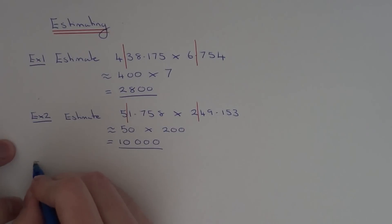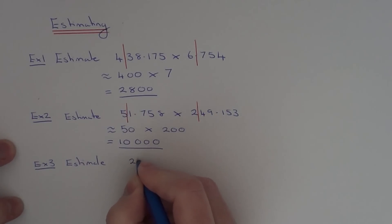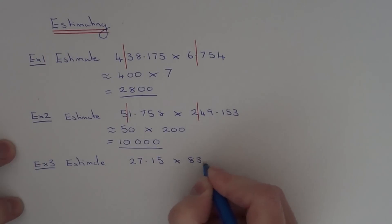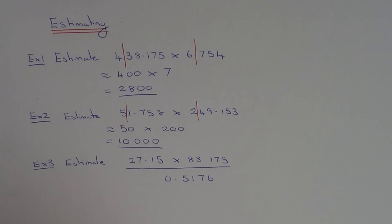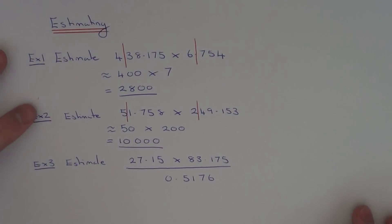So let's do one final example. This one's a little bit harder. So we've got to estimate 27.15 times 83.175 all divided by 0.5176. So again, just round each number off to one significant figure.